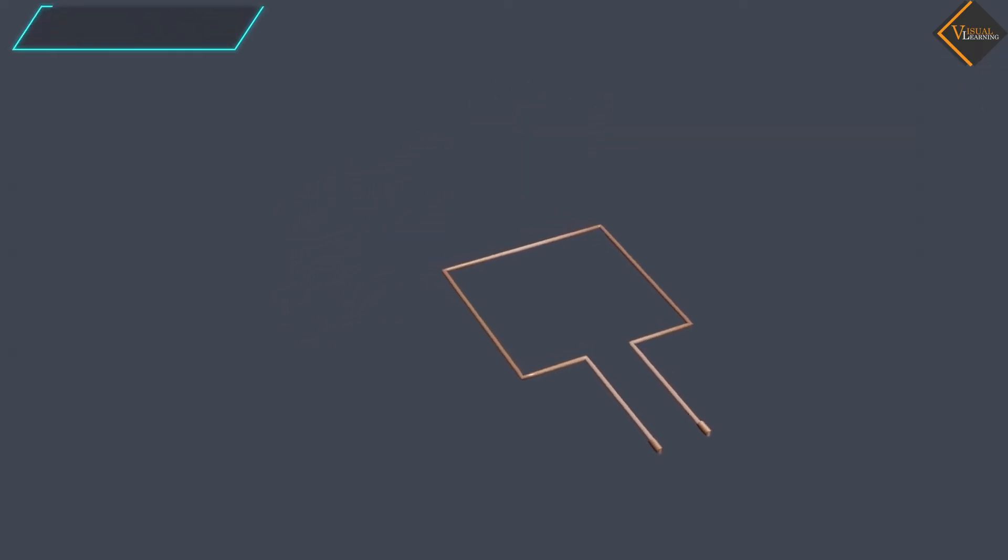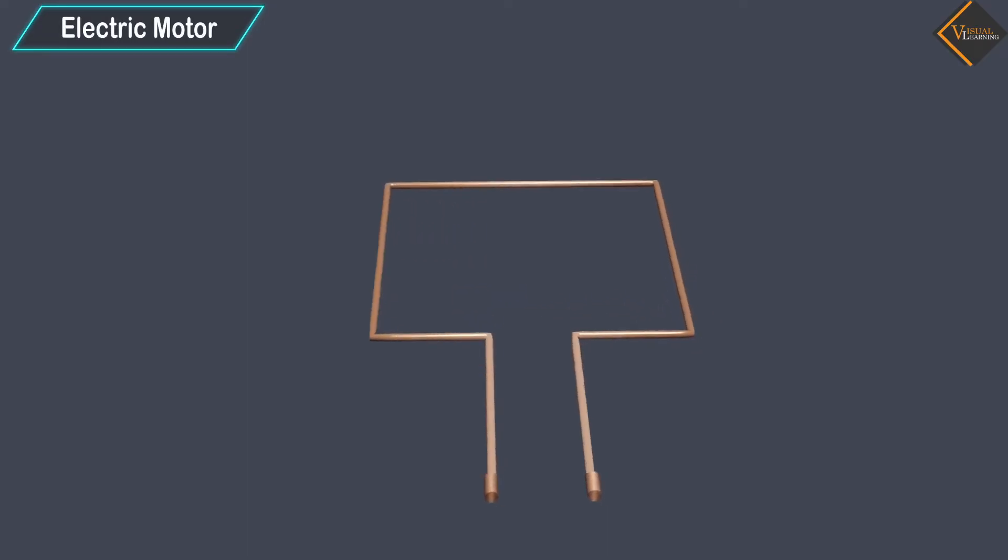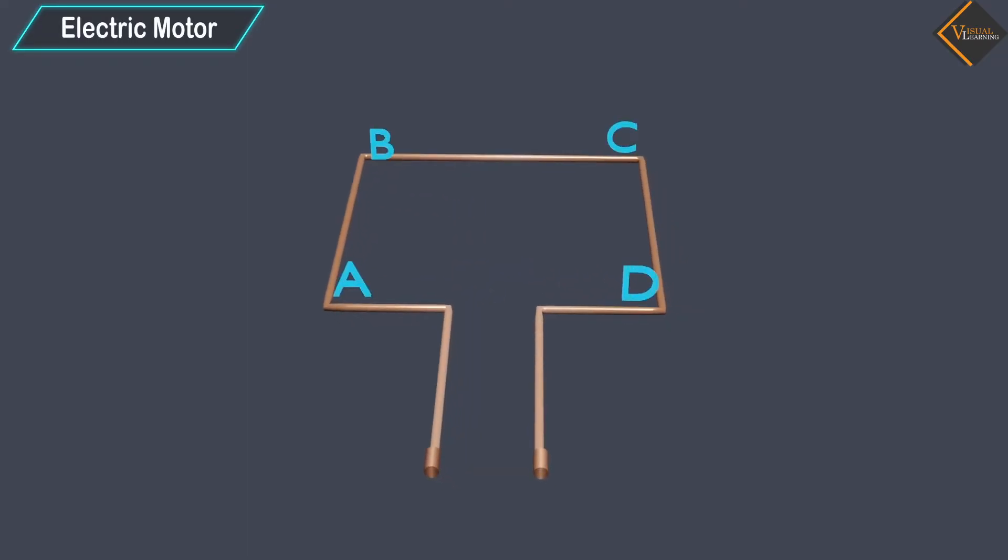An electric motor consists of a rectangular coil, A, B, C, D, of insulated copper wire.